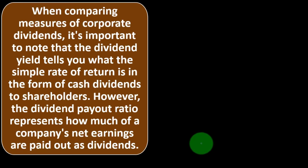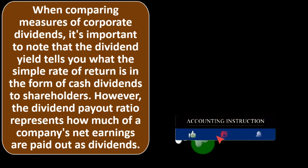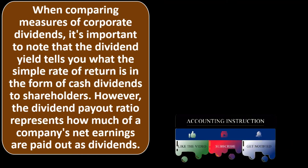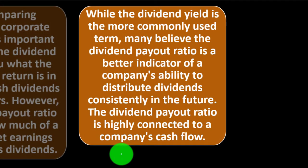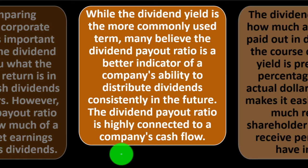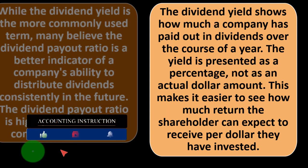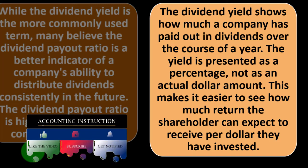Dividend yield versus dividend payout ratio: when comparing measures of corporate dividends, it's important to note that the dividend yield tells you the simple rate of return in the form of cash dividends to shareholders. However, the dividend payout ratio represents how much of a company's net earnings are paid out as dividends. Many believe the dividend payout ratio is a better indicator of a company's ability to distribute dividends consistently in the future, as it is highly connected to a company's cash flow. The dividend yield shows how much has been paid out over the course of a year, presented as a percentage rather than a dollar amount.